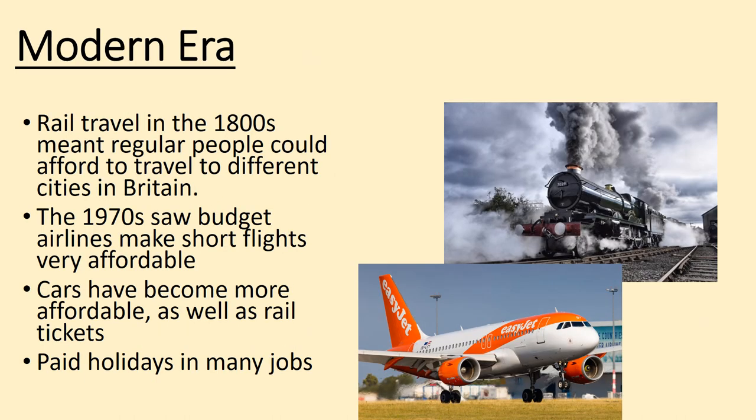Our last historical era is the modern era, going from 1700 all the way to now. In the late 1700s and into the mid 1800s, rail travel was the way to go. Steam engines powered very large trains, initially used to ship goods over long distances, but people soon realized that passenger carriages could move many people a great distance in a short time. The more trains there were, the more affordable they became — this is supply and demand: the more there is of something, the less it costs.